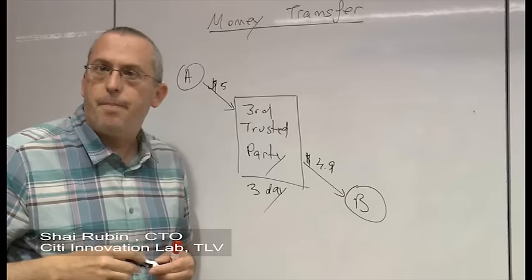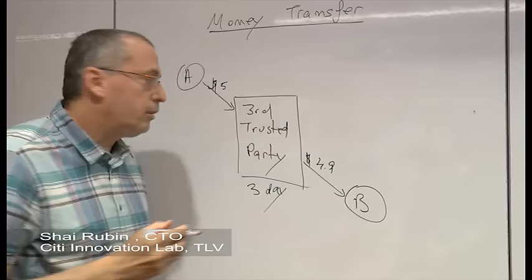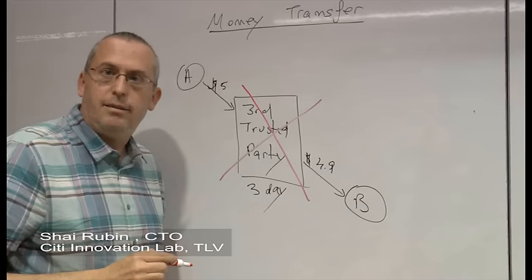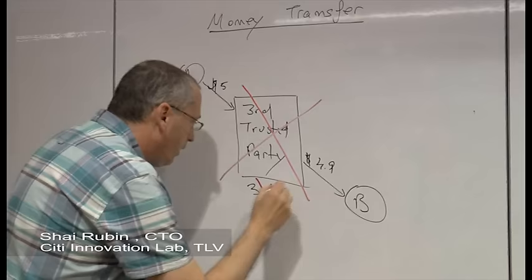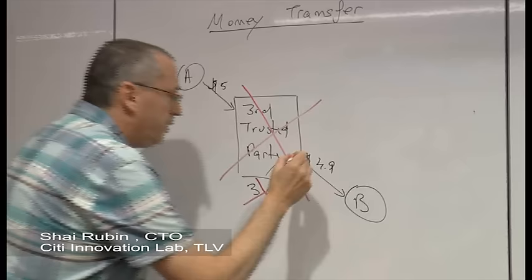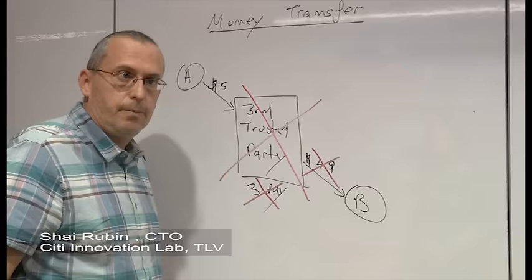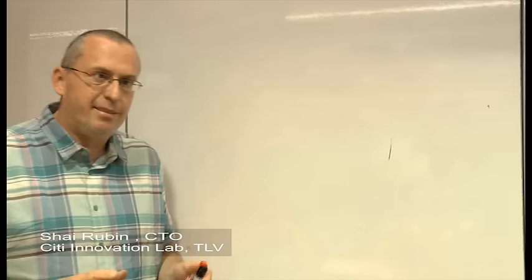What blockchain is attempting to solve is, first, to do the transfer money without the trusted entity at the middle, so people can actually talk with each other. Second, to do it faster than three days, actually immediately. And third, to do it cheaper than the fee that the third party collects. So let's dive into how blockchain addresses this money transfer problem.